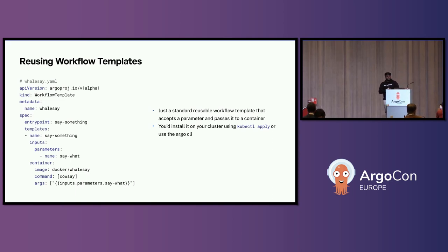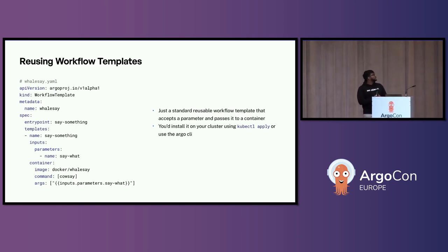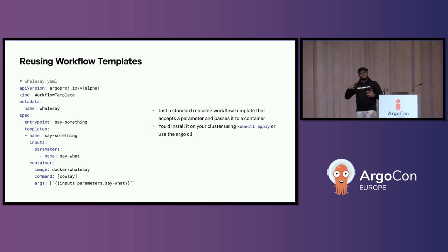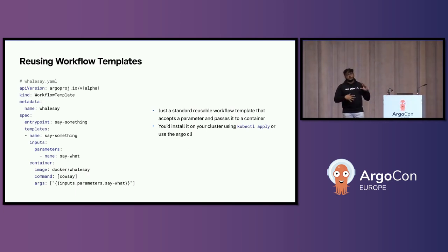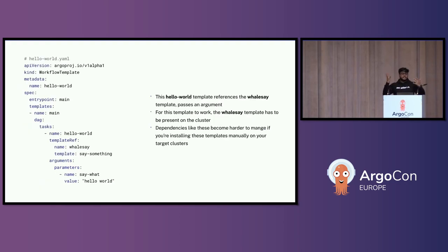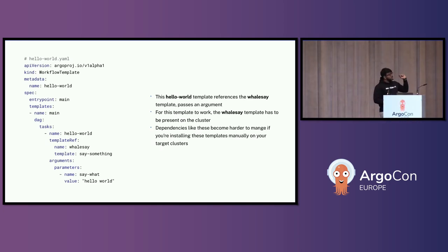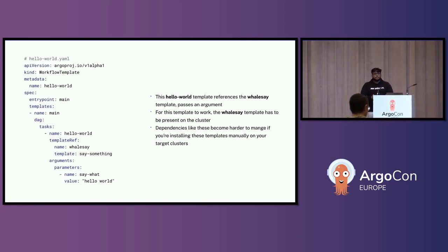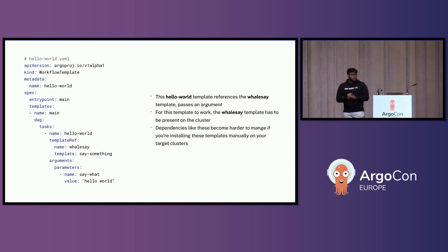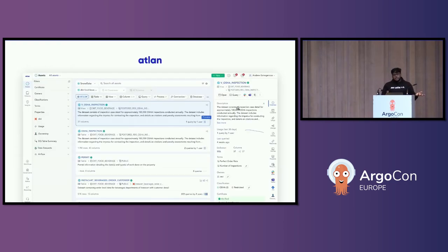I want to talk a little bit about reusability in Argo workflows. Think of this as some standard workflow template that you are constantly reusing in your org — maybe it's some processing step or some API call. Now if I want to reference this workflow template in, say, a Hello World workflow, we normally do a template ref and pass some parameters. For that workflow to run, the base template has to be present on the cluster. So immediately you can see there's a dependency graph forming — you need other workflow templates present on the cluster for your workflow to run. This is something we ran into at Atlant when we started our journey with Argo workflows. It became a mess, so we started to solve around it.